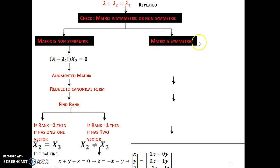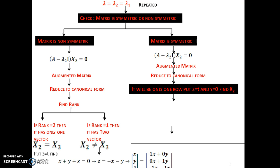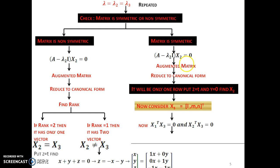This won't work if the matrix is symmetric. If the matrix is symmetric, to reduce the matrix into canonical form, the first eigenvector has Z as T and Y as 0, giving X2 — that is okay. But for the third eigenvector, we won't alternate as before; we have to use the LMN method. Assume the eigenvector as a column vector [L, M, N]. We know that X1 transpose times X3 and X2 transpose times X3 must equal zero, giving two equations in L, M, N. Solve these two equations by Cramer's rule to get L, M, N, which is the third eigenvector.